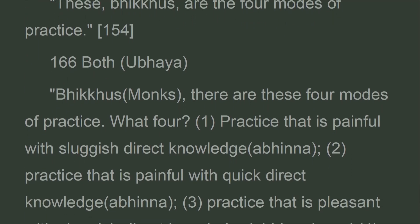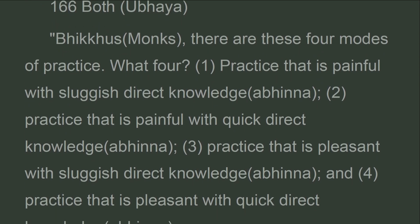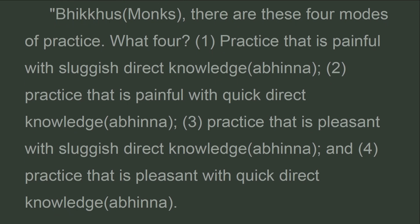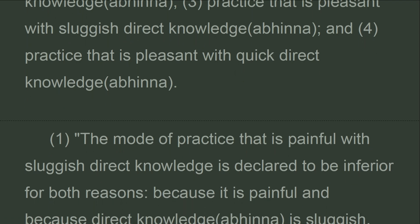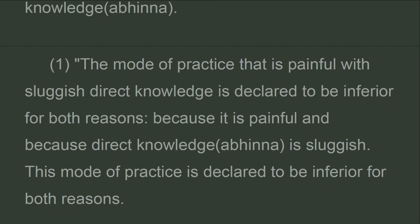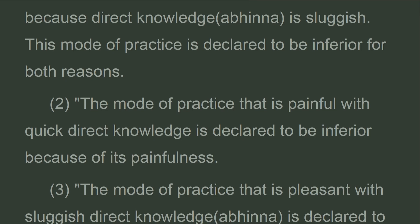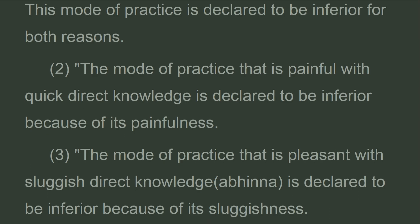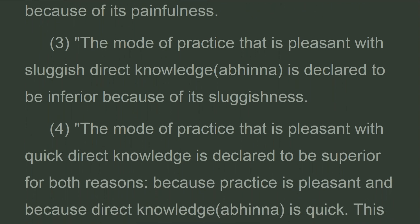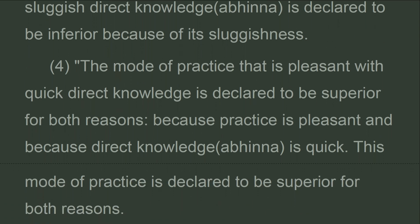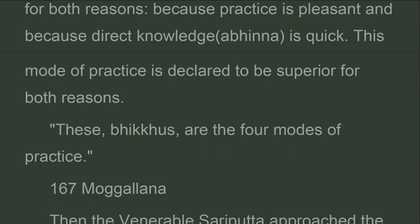Both. Bhikkhus, there are these four modes of practice: practice that is painful with sluggish direct knowledge, painful with quick direct knowledge, pleasant with sluggish direct knowledge, and pleasant with quick direct knowledge. The mode that is painful with sluggish direct knowledge is declared to be inferior for both reasons — because it is painful and because direct knowledge is sluggish. The mode painful with quick direct knowledge is inferior because of its painfulness. The mode pleasant with sluggish direct knowledge is inferior because of its sluggishness. The mode pleasant with quick direct knowledge is declared to be superior for both reasons — because practice is pleasant and because direct knowledge is quick.